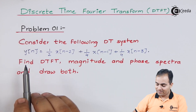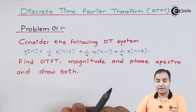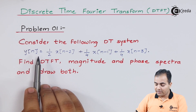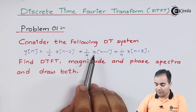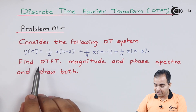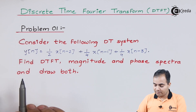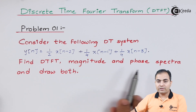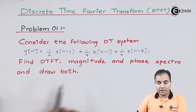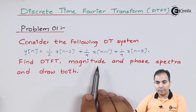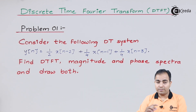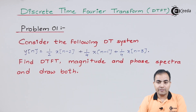Problem number one: consider the following discrete time system. The function is given as y[n] = (1/2)x[n-2] + (1/4)x[n-1] + (1/4)x[n-3]. What is asked: find the DTFT, that is the Discrete Time Fourier Transform of y[n], the magnitude response, phase spectrum, and then we will draw the graph for both the magnitude plot and the phase spectrum.